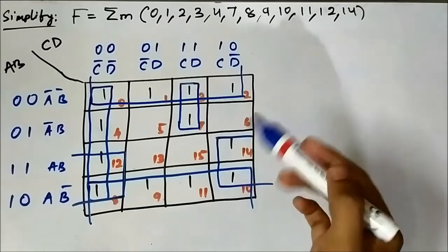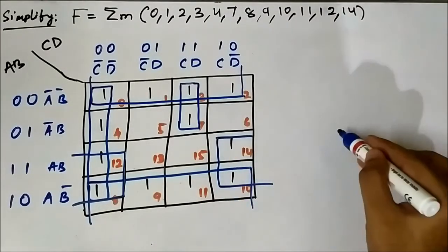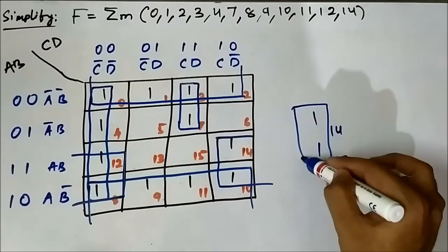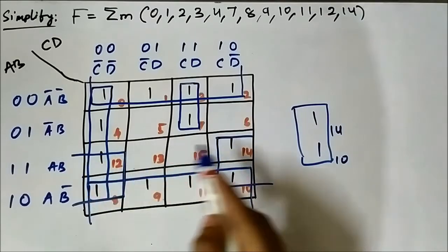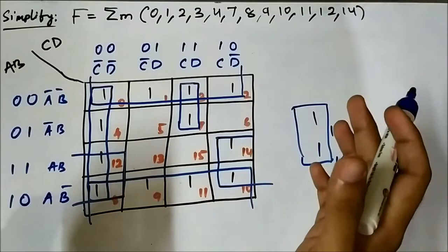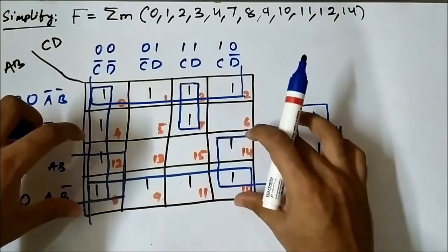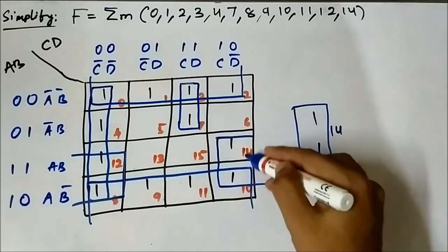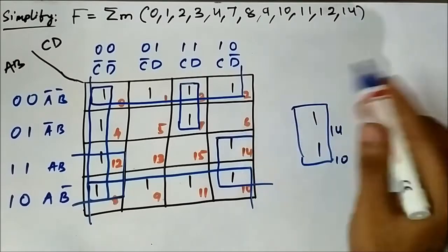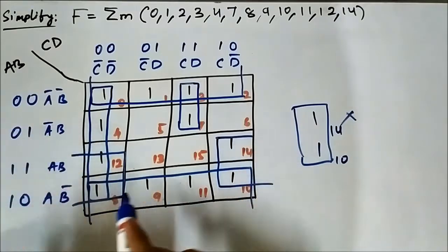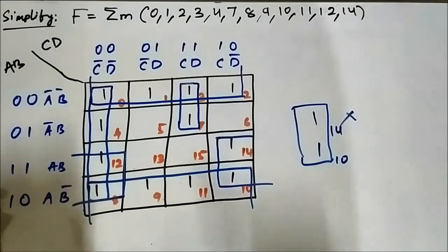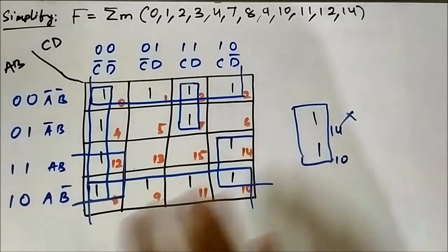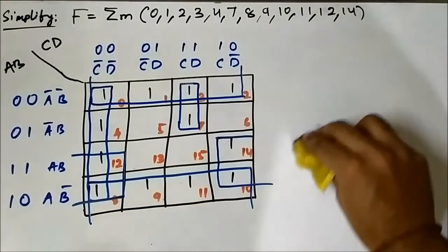What most students who are new to this concept do is they form a pair with cells 14 and 10 — but that is wrong. Because here there is a possibility of a higher-member group to be formed. This quad possibility is there. So whenever there is a possibility of a higher population group, you should always go for that. You have to form a quad involving cells 12, 8, 10, and 14. Always give priority to a more populous group.